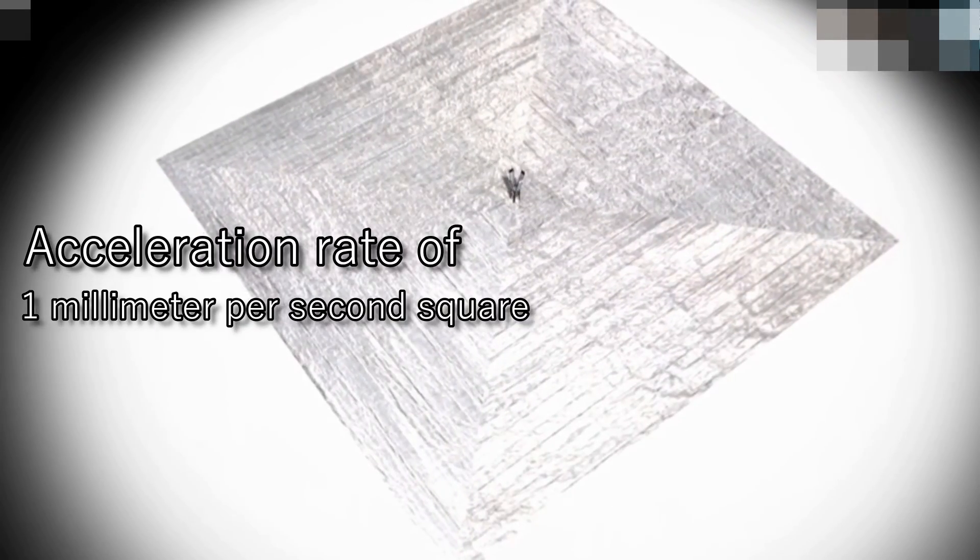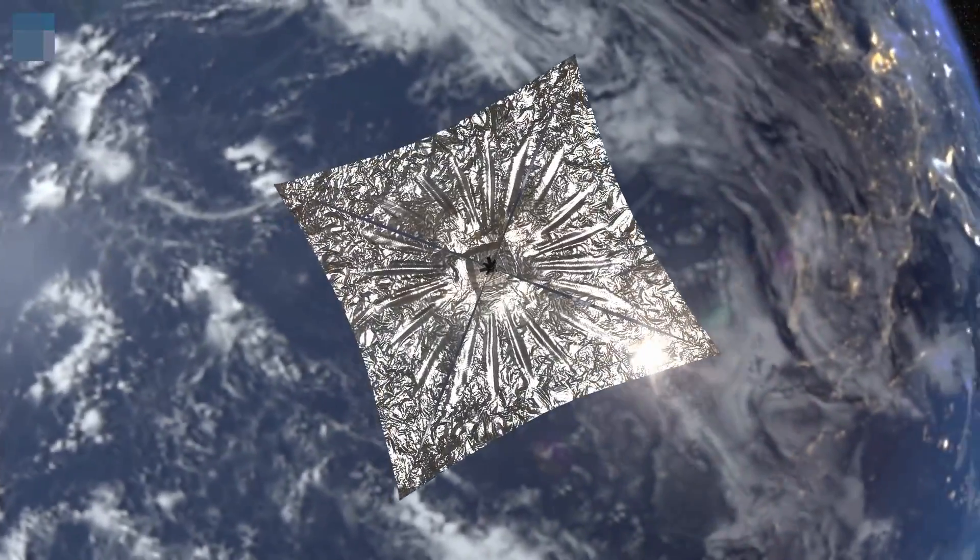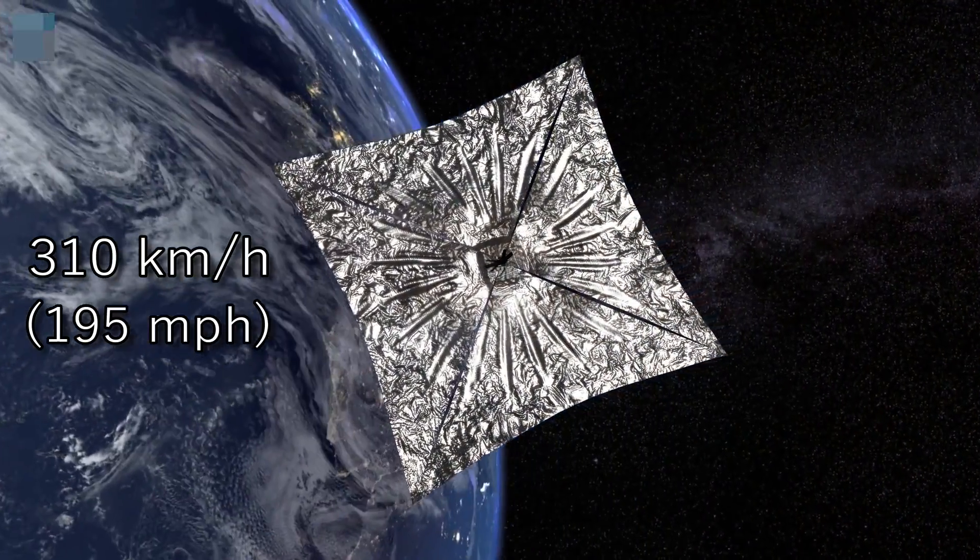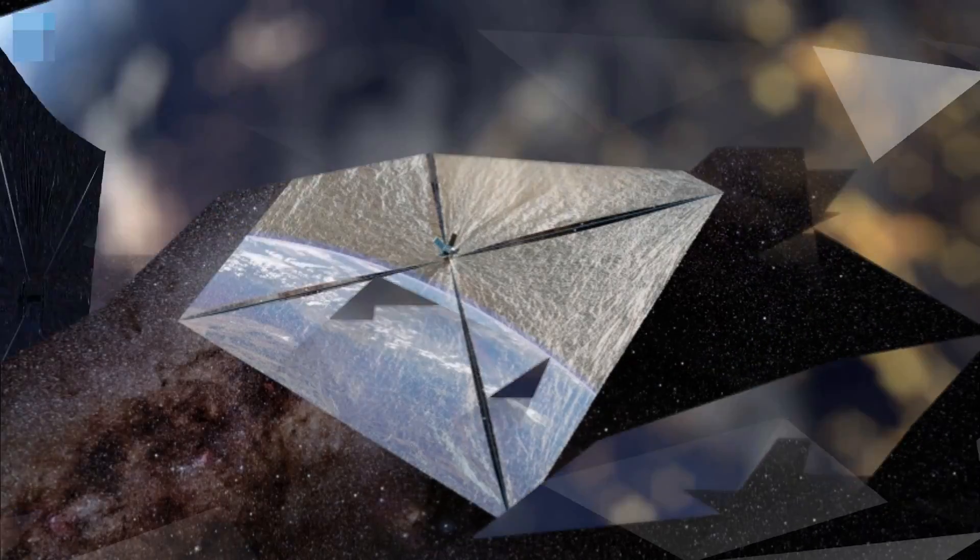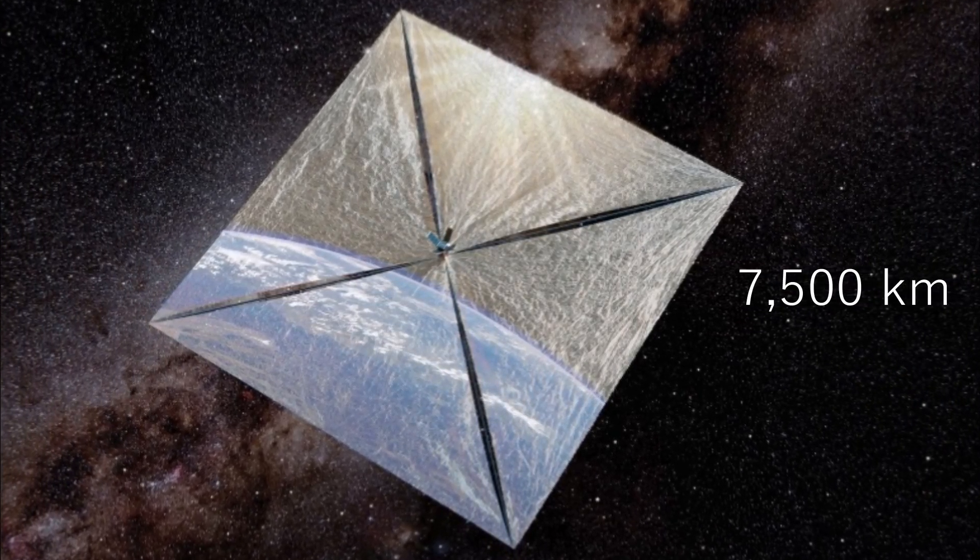At an acceleration rate of 1 mm per second squared, a solar sail would increase its speed by approximately 310 km per hour after one day, moving a distance of 7,500 km in the process.